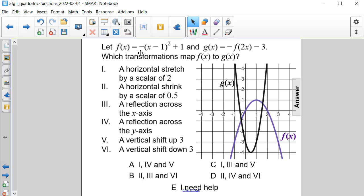Let f(x) be equal to the negative of (x - 1)² plus 1 and g(x), which is equal to the negative of f(2x) minus 3. Which transformations map f(x) to g(x)?